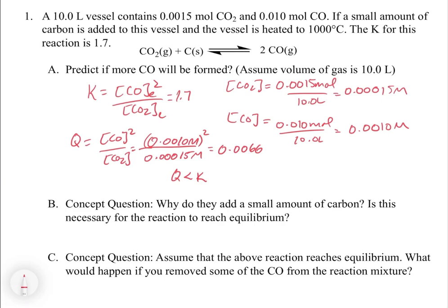Since Q is much less than K, we are definitely not at equilibrium. Q less than K means we have too few products and too many reactants, so the reaction favors the forward direction. Therefore, yes — more CO will be formed as the reaction proceeds toward equilibrium.